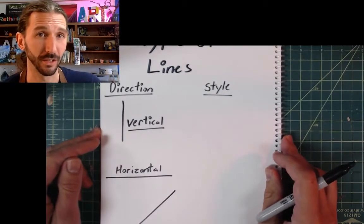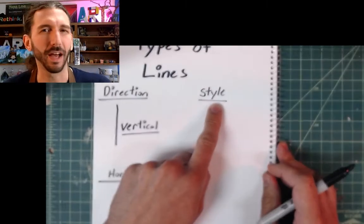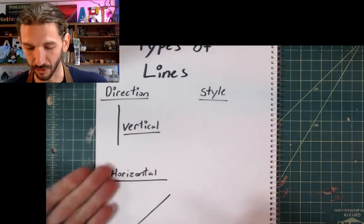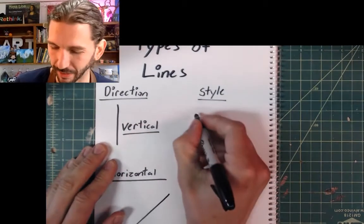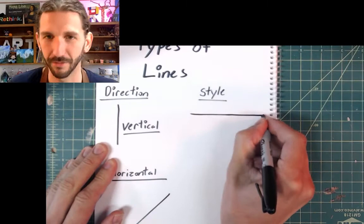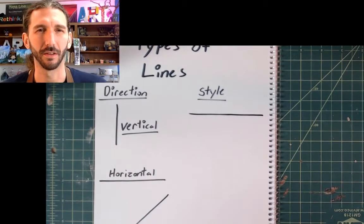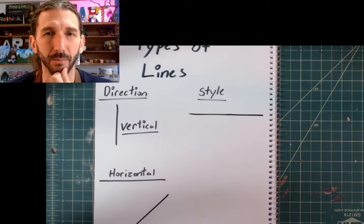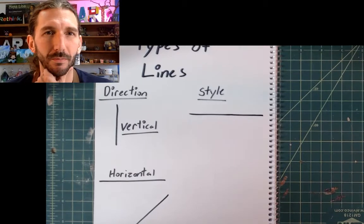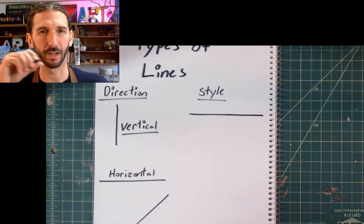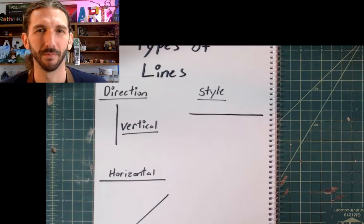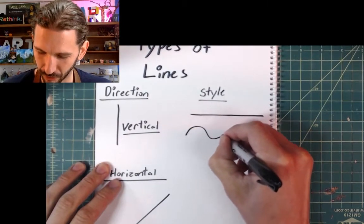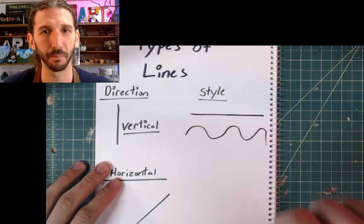Now those are the directions, but there's also different styles — different kinds of lines that we can do. One kind of line is a straight line. It's flat, it's straight. Can any of you think of another kind of line that we can make? Think of the ocean — what kind of line do you think of? How about a wavy line?